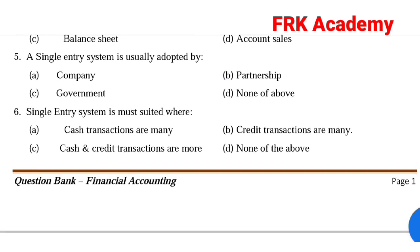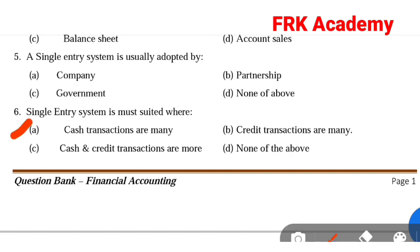Sixth question: Single entry system is most suited when. Option A: cash transactions are many. Option B: credit transactions are many. Option C: cash and credit transactions are more. Option D: none of the above. Answer: Option A, cash transactions are many.